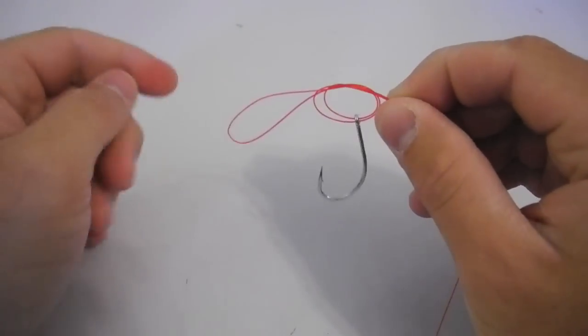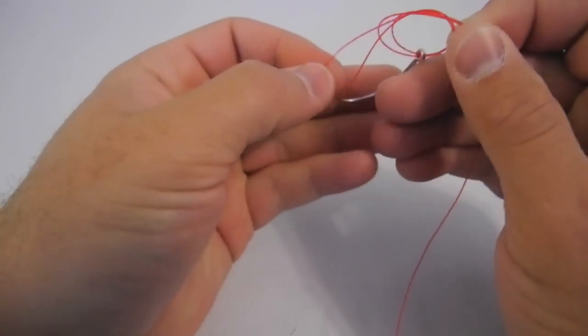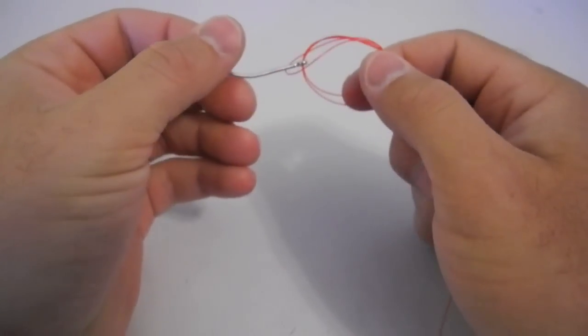Now you see how I have this loop hanging off here to the left. I actually pass the hook or fly through that entire loop. So I just take it and pass it all the way through, just like so.